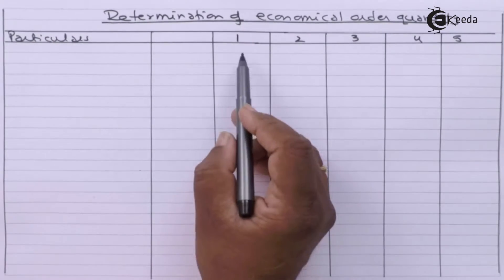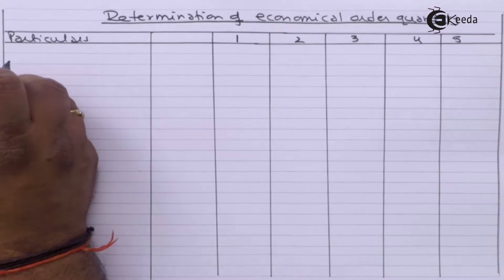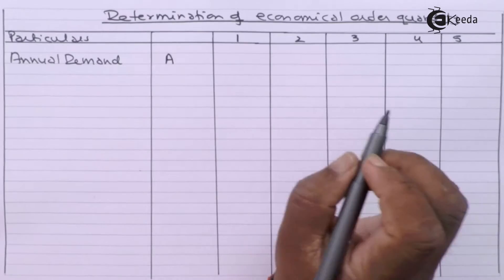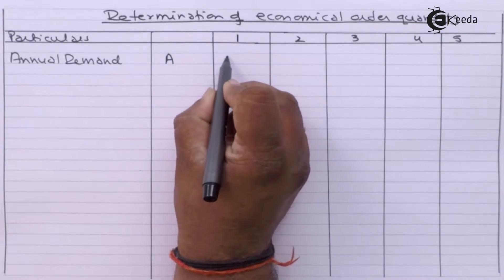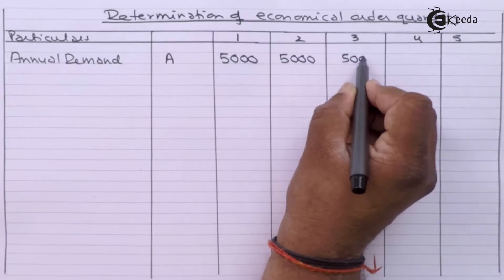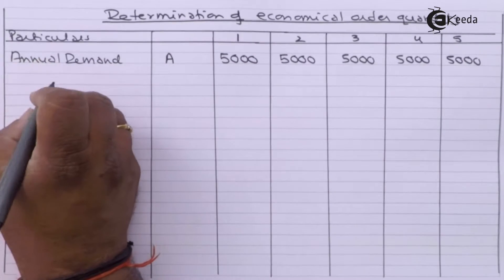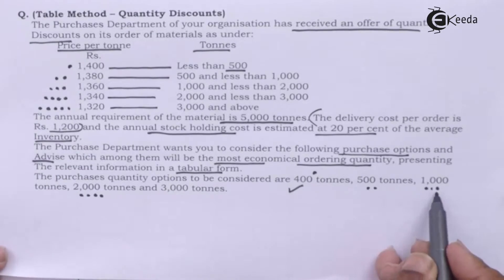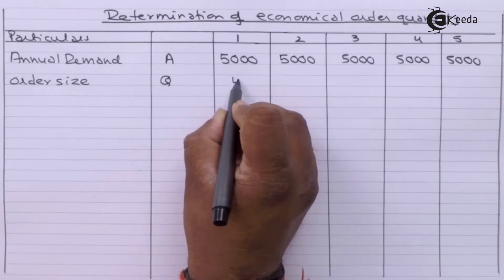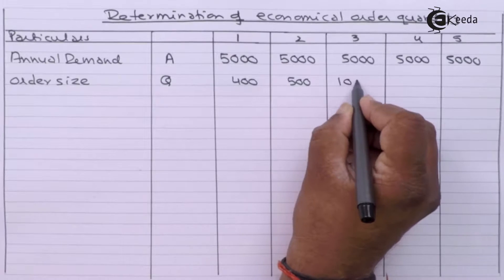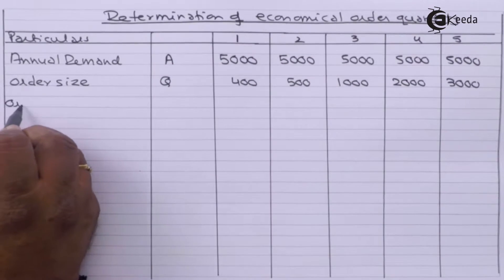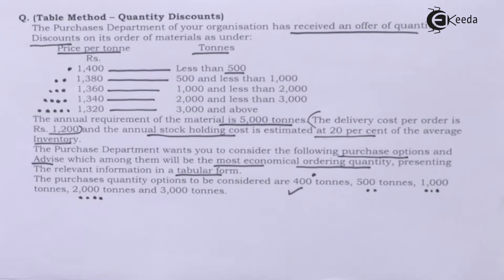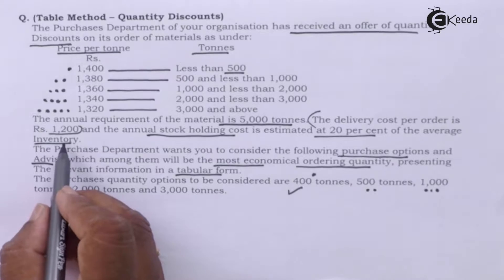Let us prepare a table. The first column is for particulars, and the five columns relate to the five options. We are required to record annual demand — in all cases it will be 5000 tons. Next, order size: 400, 500, 1000, 2000, and 3000 tons. Ordering cost per order: the delivery cost per order is 1200, which is the ordering cost.